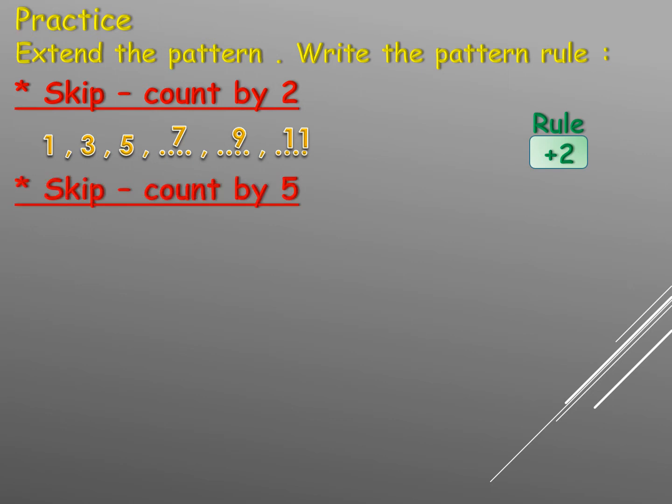Next one: skip counting by five — five, ten, fifteen. Is this ascending or descending, forward or backward? Forward, that means plus. The difference between five and ten is five. So the rule will be plus five.